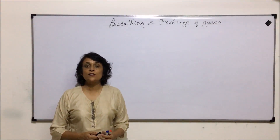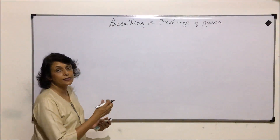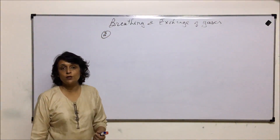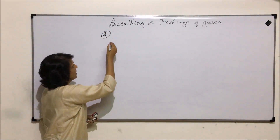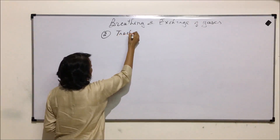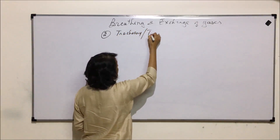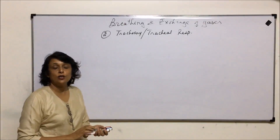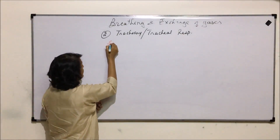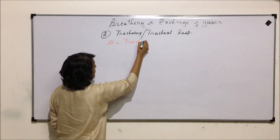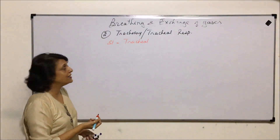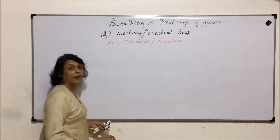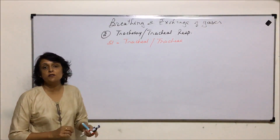Here we will talk about the next respiratory organ and the type of respiration based on that. This is seen in case of arthropods, especially insects. The respiration is known as tracheary respiration or tracheal respiration. The structures or tubes which help are called tracheal tubes or tracheary, or sometimes they are also known as trachea. These tubes are made up of a chitin-like substance.